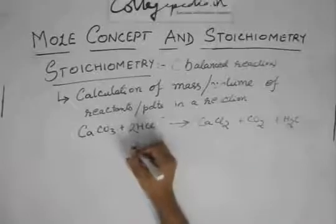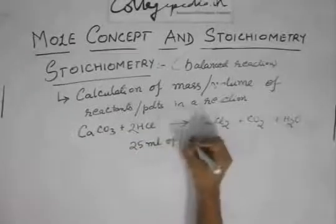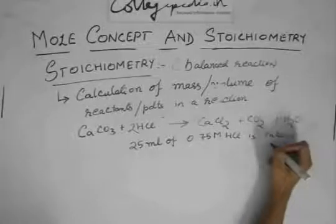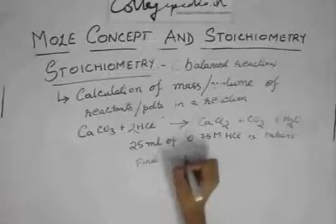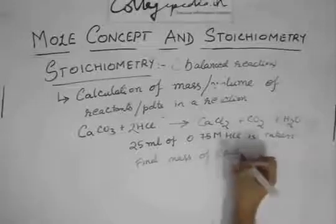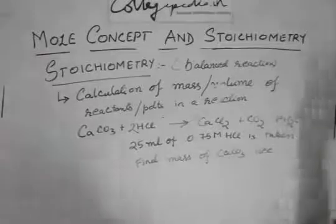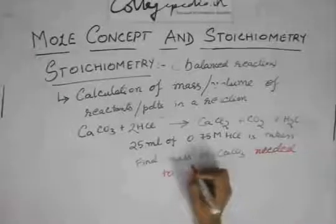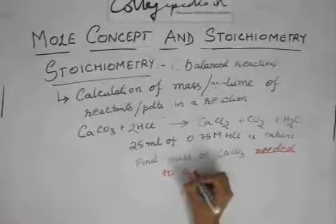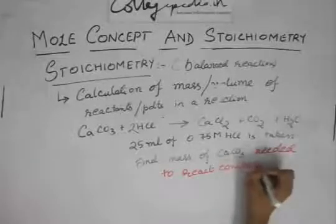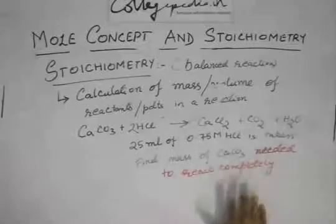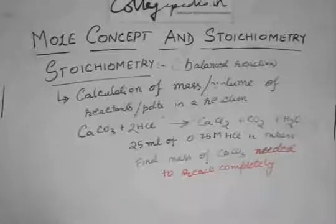Now it is said that 25 ml of 0.75 molar HCl is taken. Find mass of CaCO3 needed to complete or react completely with HCl of course. So they have said that this much HCl is taken, find mass of CaCO3 needed to react completely.